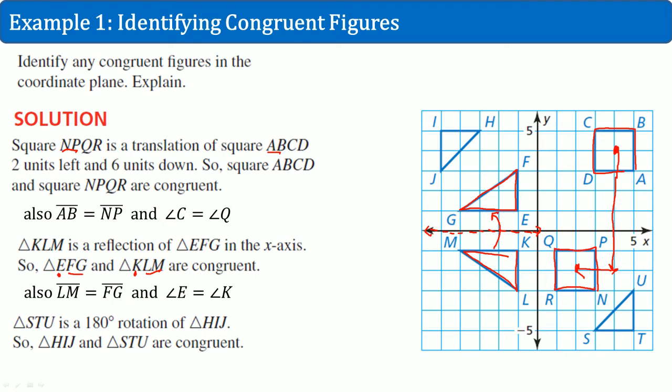And the last one, STU, which is this triangle here, can be made into HIJ. And we do that by rotating it. It rotates 90, then another 90 here, which makes it 180 degrees. Likewise, if the triangles or the figures are congruent, if you have congruent figures, then you have congruent parts. So ST is congruent to HI and also I is congruent to T. Congruent figures have congruent parts.